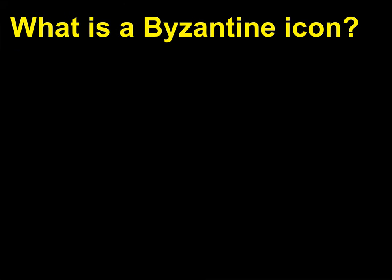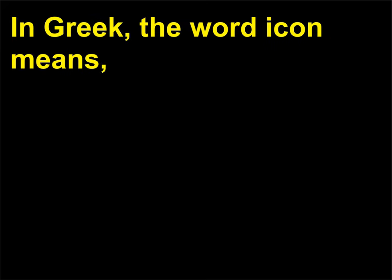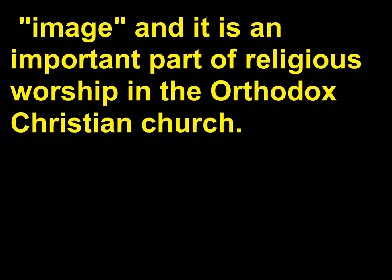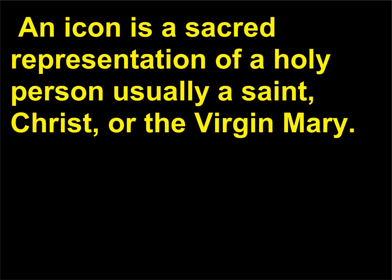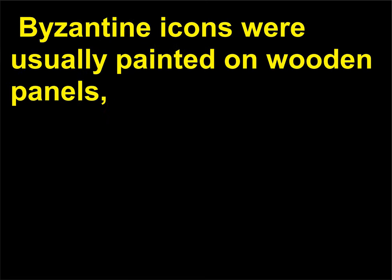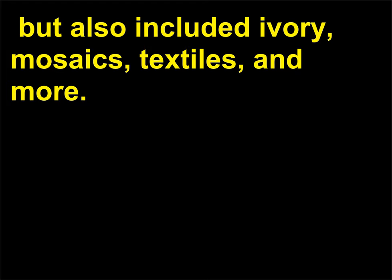What is a Byzantine icon? In Greek, the word icon means image, and it is an important part of religious worship in the Orthodox Christian Church. An icon is a sacred representation of a holy person — usually a saint, Christ, or the Virgin Mary. Byzantine icons were usually painted on wooden panels, but also included ivory, mosaics, textiles, and more.